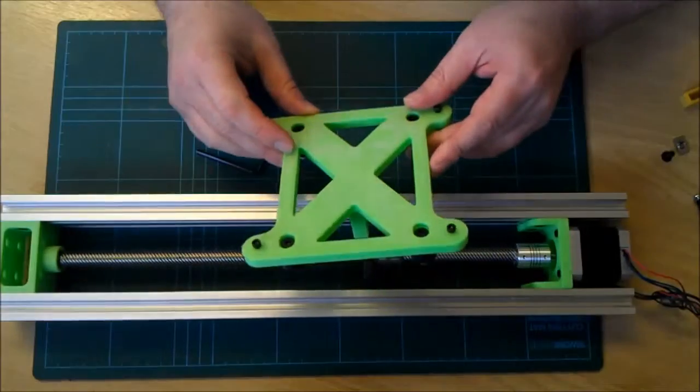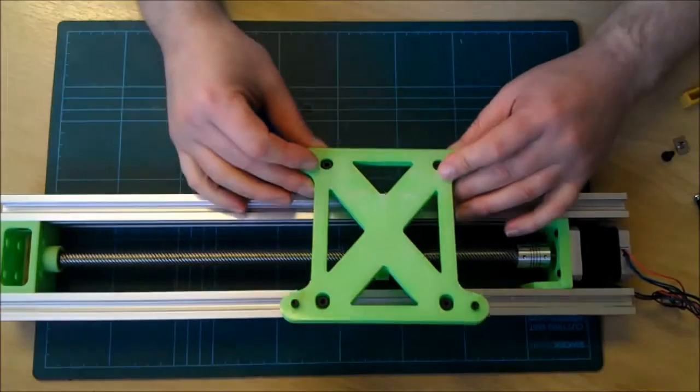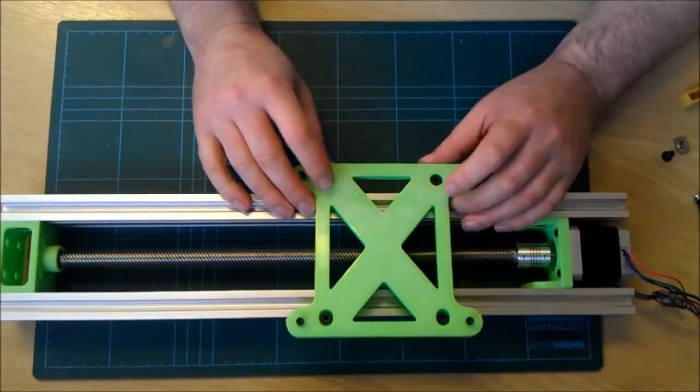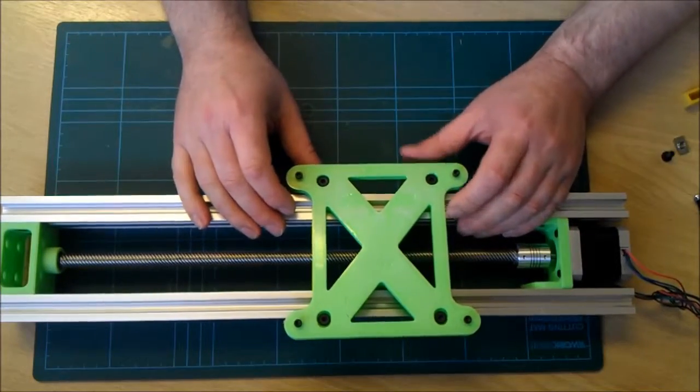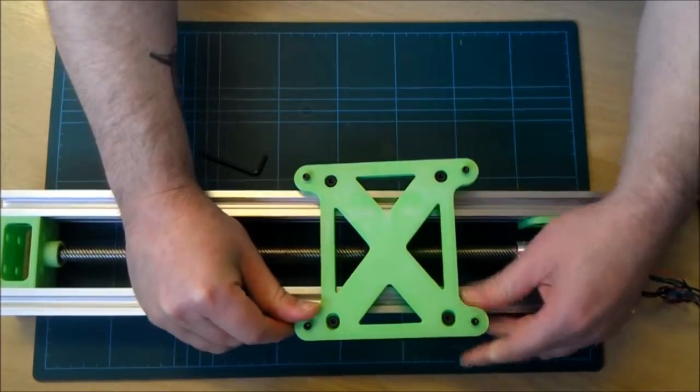So now take your Y carriage and stick the circular sides onto the V slot and we're going to just push it over like so.